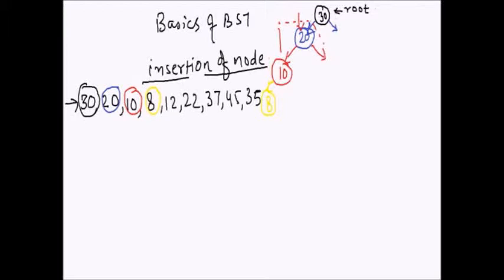Now comes 12. Is it less than 30? Yes. Is it less than 20? Yes — move left. Is it less than 10? No, it is not less than 10. So it has to be on the right hand side of 10. Is there anything on the right hand side? No. So we add that node and associate 10's right pointer to 12.